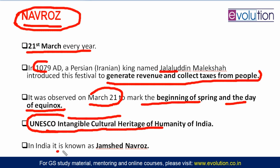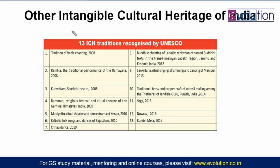In India, Navroz is particularly known as Jamshed Navroz. India has several intangible cultural heritages classified by UNESCO. Traditional Vedic chanting got intangible cultural heritage status in 2008. Ram Leela also received the status. Kuttiyam dance, a Sanskrit theatre of South India, also got the status. Raman, a religious festival and ritual theatre of Gadwal Himalayas, was recognized in 2009.